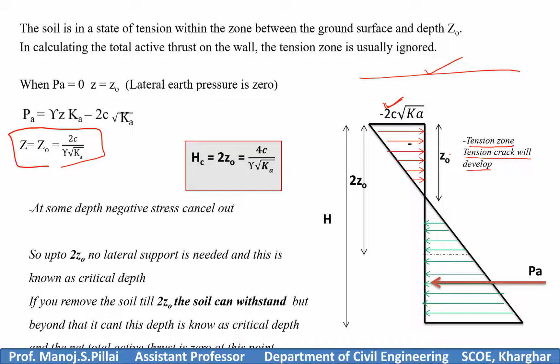Now there is something called unsupported height or critical depth. That means up to this depth, you can excavate your soil without any support. You can see here, if you remove the soil till two times Z0, the soil can withstand, but beyond that it cannot. This depth is known as critical depth. Till HC you can excavate the soil without any support. When you take two times, you can see a negative part is created, and till here the same magnitude Z0, a positive part is created. So it compensates. We are telling till 2 Z0, we call it as critical depth, that is HC.